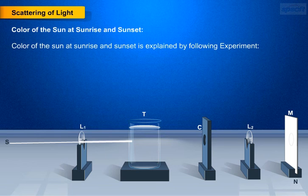Allow the light beam to pass through a transparent glass tank T containing clear water. Allow the beam of light to pass through a circular hole C made in a cardboard. Obtain a sharp image of the circular hole on a screen M using a second converging lens L2.